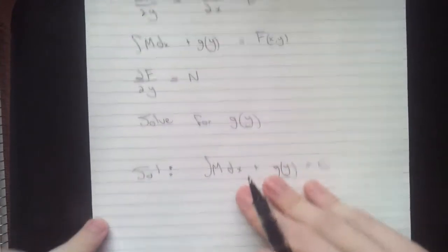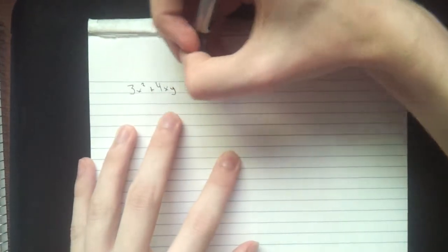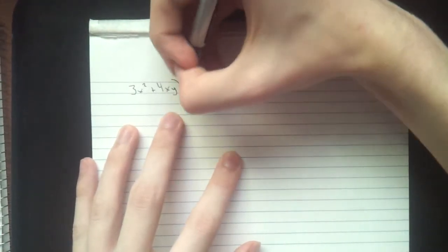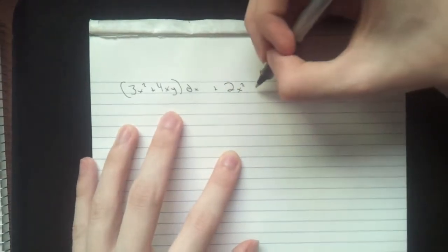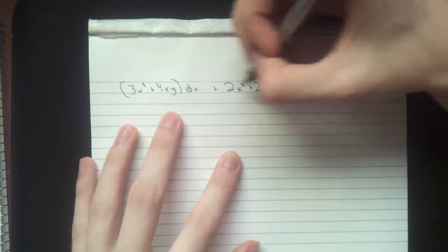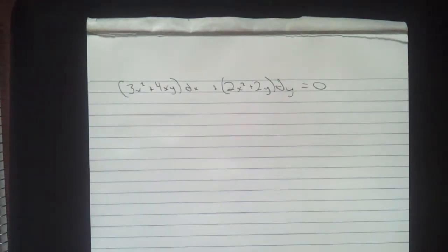So let's do an example. Our sample question here is 3x squared plus 4xy dx plus 2x squared plus 2y dy equals 0. So first thing, of course, we're going to check for exactness.